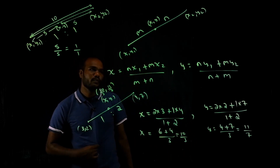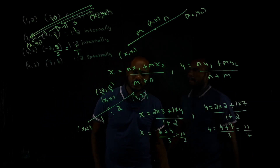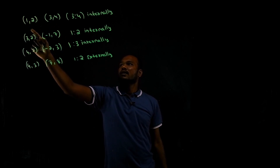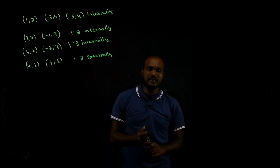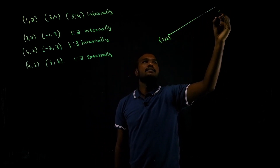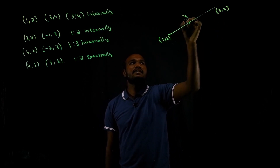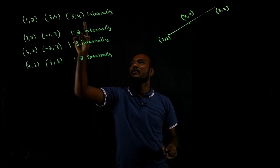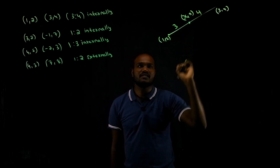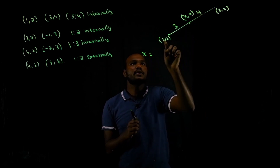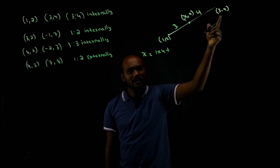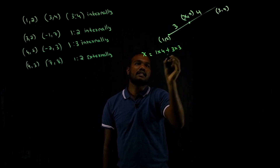We'll write the formula again and do one or two more questions. There are practice questions. Two points are given: 1 comma 2 and 3 comma 4, dividing in ratio 3 is to 4 internally. For x: 4 into 1 plus 3 into 3, divided by 3 plus 4.